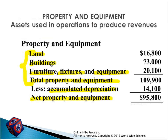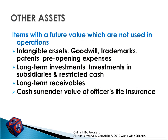We also have other assets — items with future value not used in operations. For example, intangible assets like goodwill, trademarks, patents, or pre-opening expenses. Long-term investments like investments in subsidiaries or restricted cash. Long-term receivables — money we should receive in the future, maybe after 5 or 10 years. The cash surrender value of life insurance policies also comes here. All these come under total assets as well.